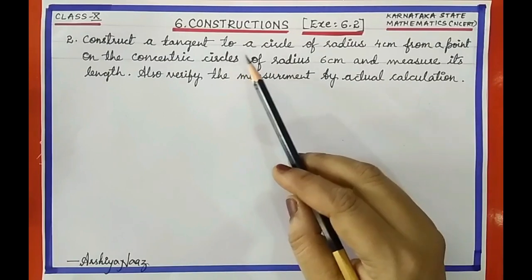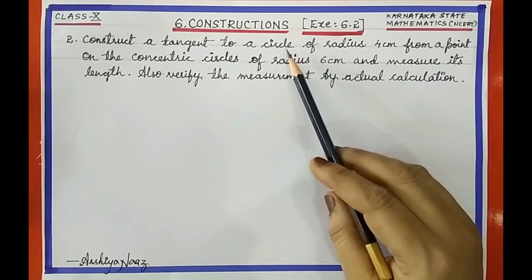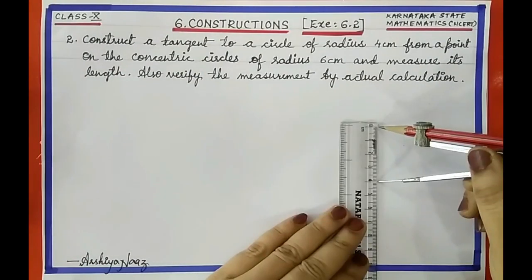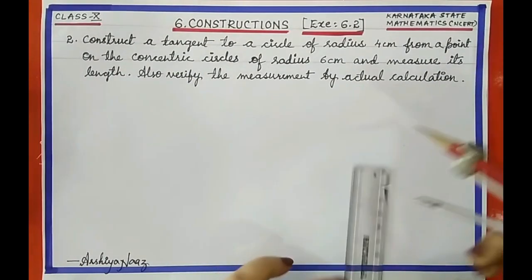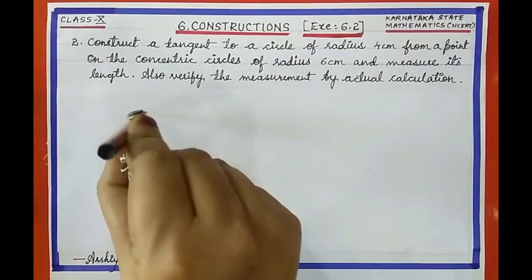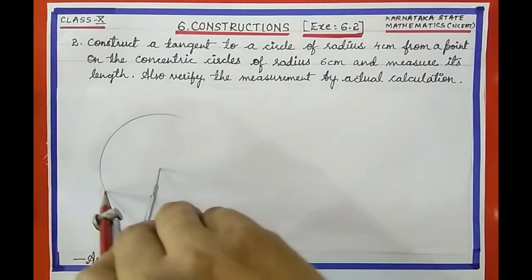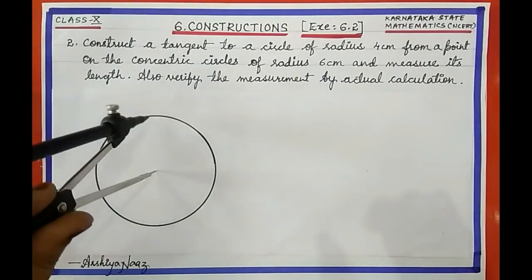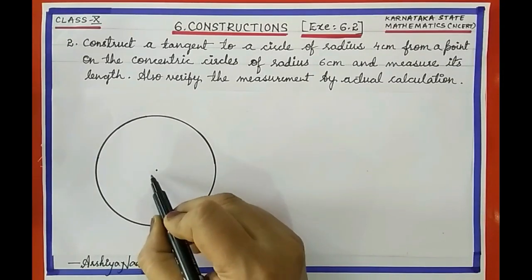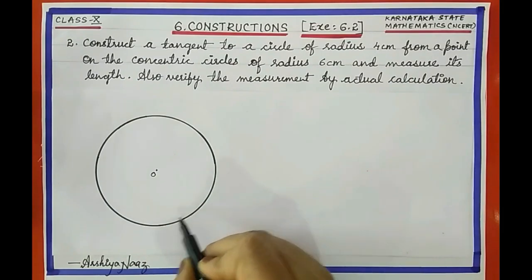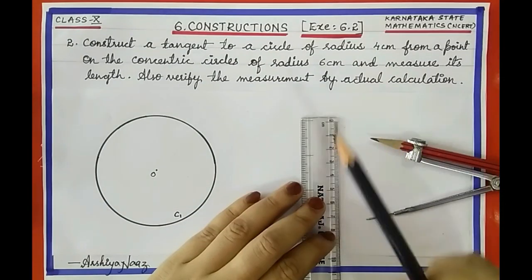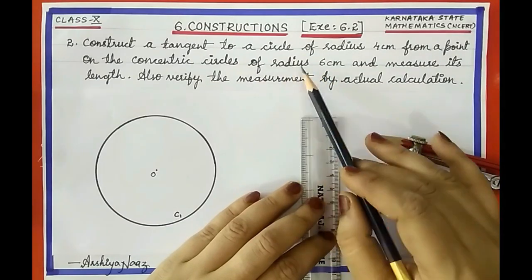First, we have to draw a circle of radius 4 centimeter. So with radius equal to 4 centimeter, draw a circle. Name the center of this circle as O, and let this be circle C1.